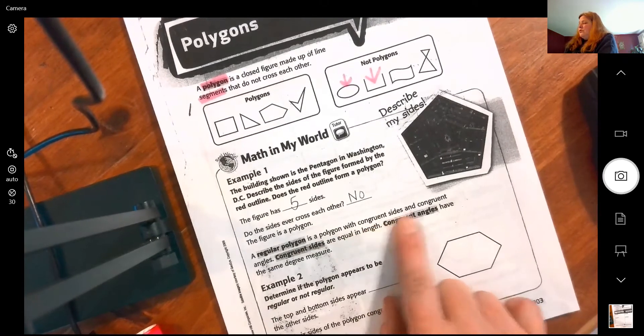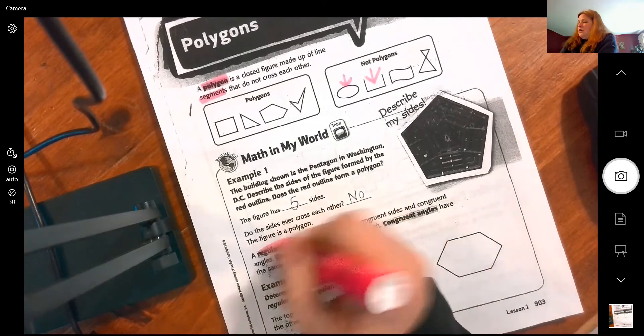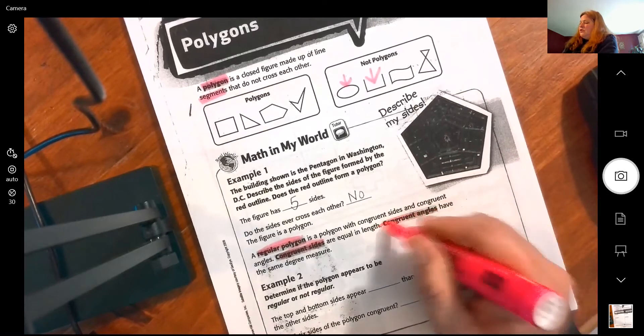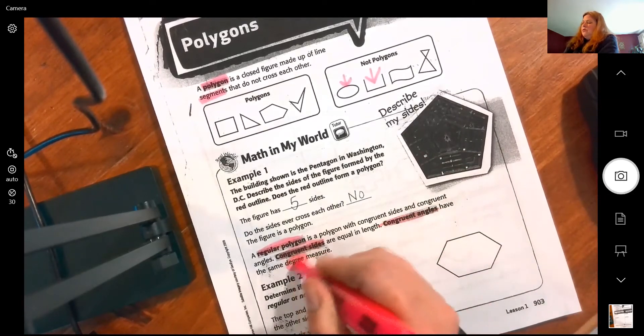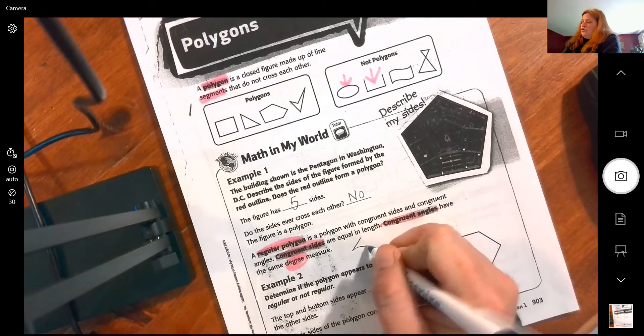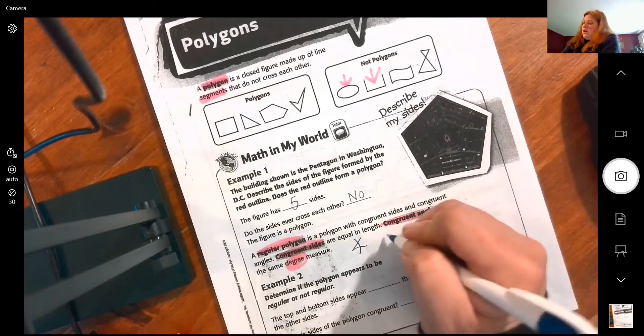Congruent sides have equal length and congruent angles have the same degree. We measure angles in a degree of measurement. Now when we use geometry, that's what we use for angle and this little circle is what we use for degrees.